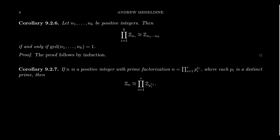Some important corollaries follow from this Chinese Remainder Theorem result. First, we can induct on the number of factors: the direct product ZN1 × ZN2 × ... × ZNK will be cyclic when their pairwise GCDs are all equal to 1 — N1 times N2 times ... NK. This follows from a straightforward induction argument left for the viewer.